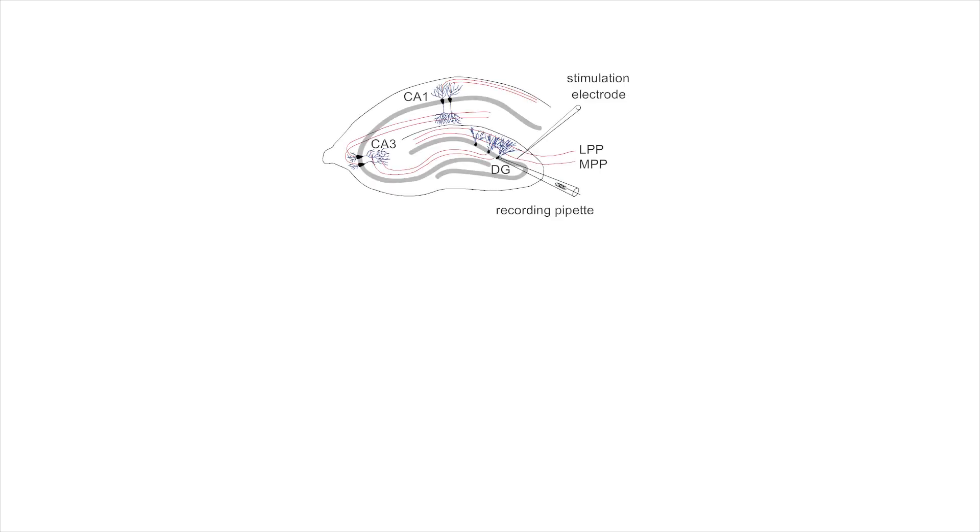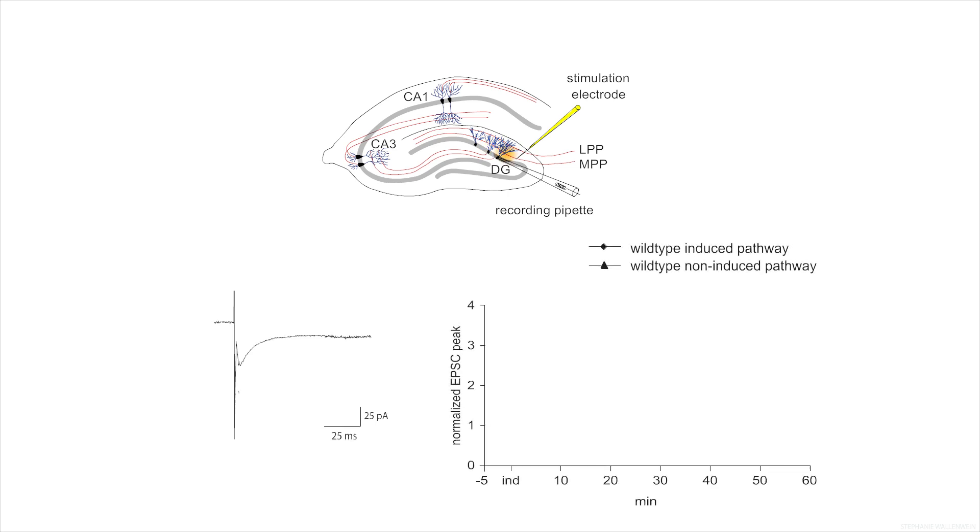in wild type animals, stimulating perforant path fibers at a frequency of 1 Hz coupled with a depolarization of the post-synaptic granule cell